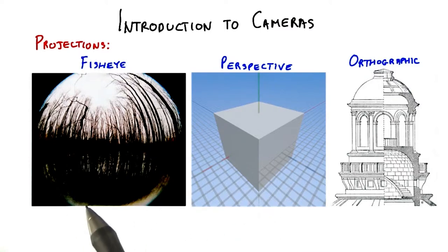A fisheye projection is possible to simulate in computer graphics. Just about anything can be simulated in computer graphics, but it's rarely used in practice.